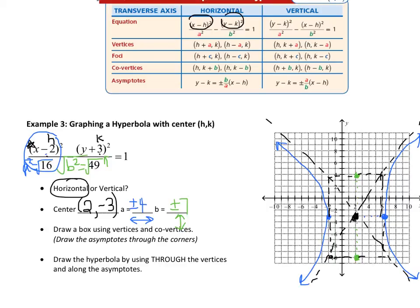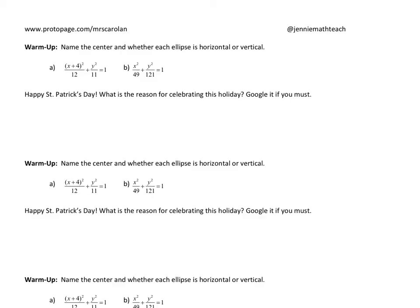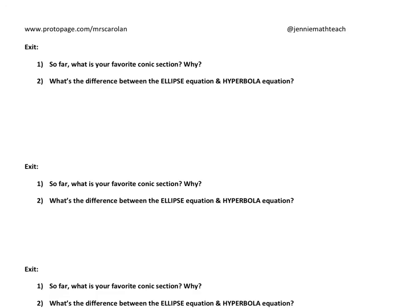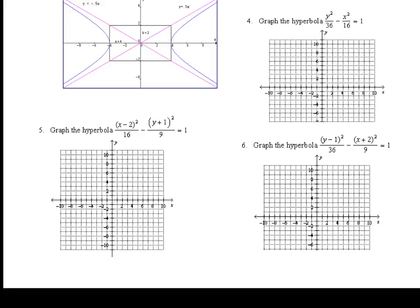Homework hint: remember when finding the centers that h is always next to the x and k is always next to the y, and you take the opposite sign. The center in number 5 would be at positive 2, negative 1. In number 6, the h is next to x and k is next to y, so the center is the opposite of plus 2 and plus 1 — giving negative 2 and positive 1. Make sure you get that center in the right spot before you draw the rest of the hyperbola. Good luck.